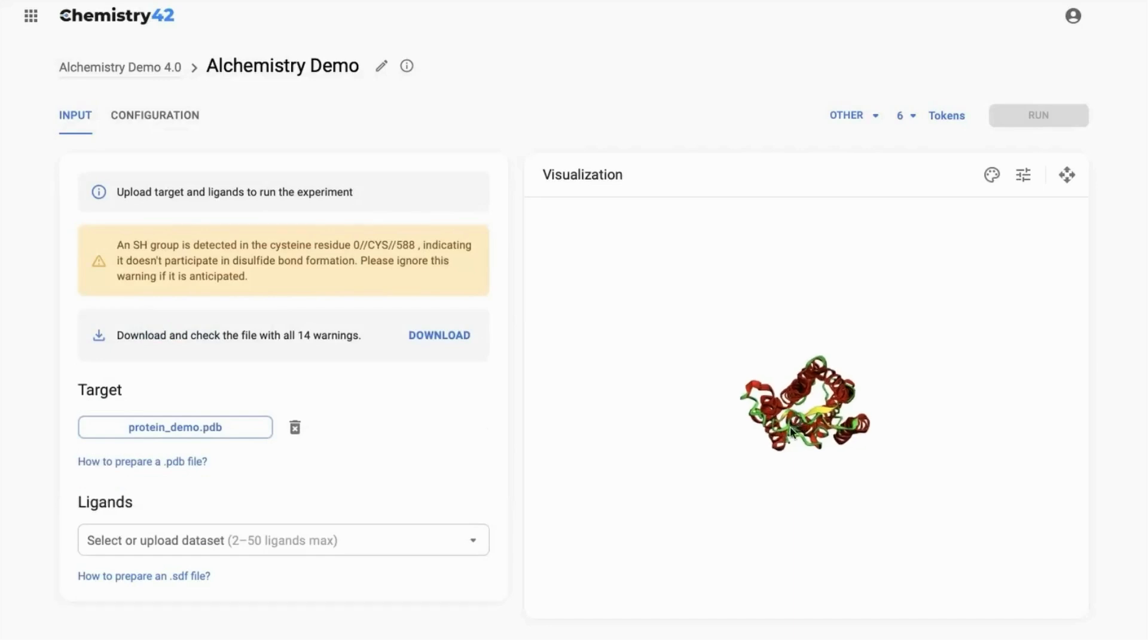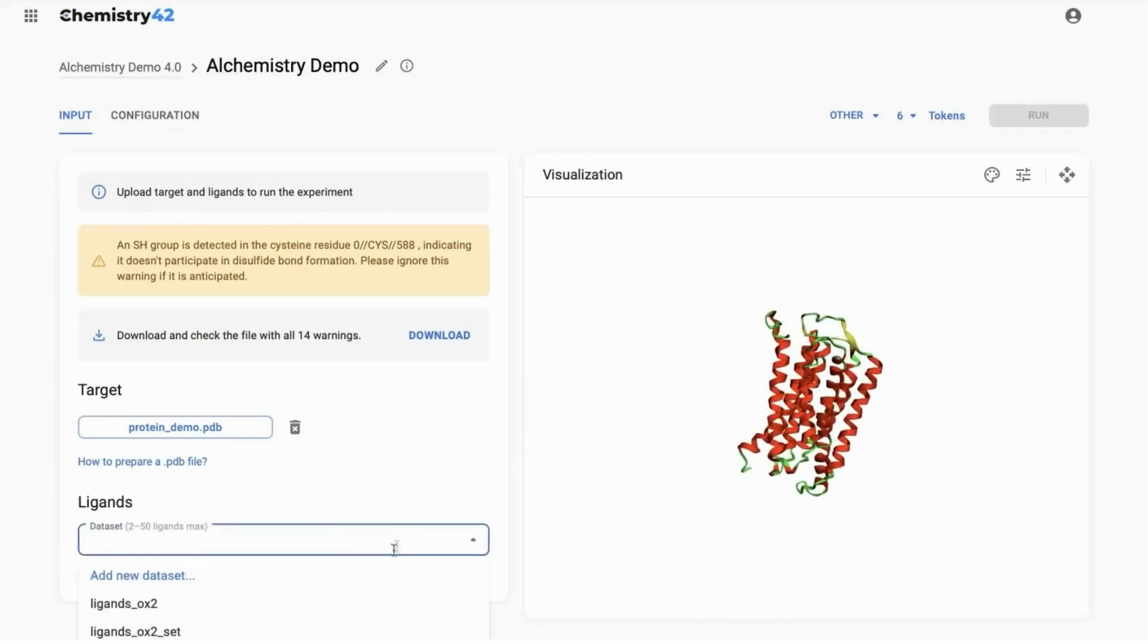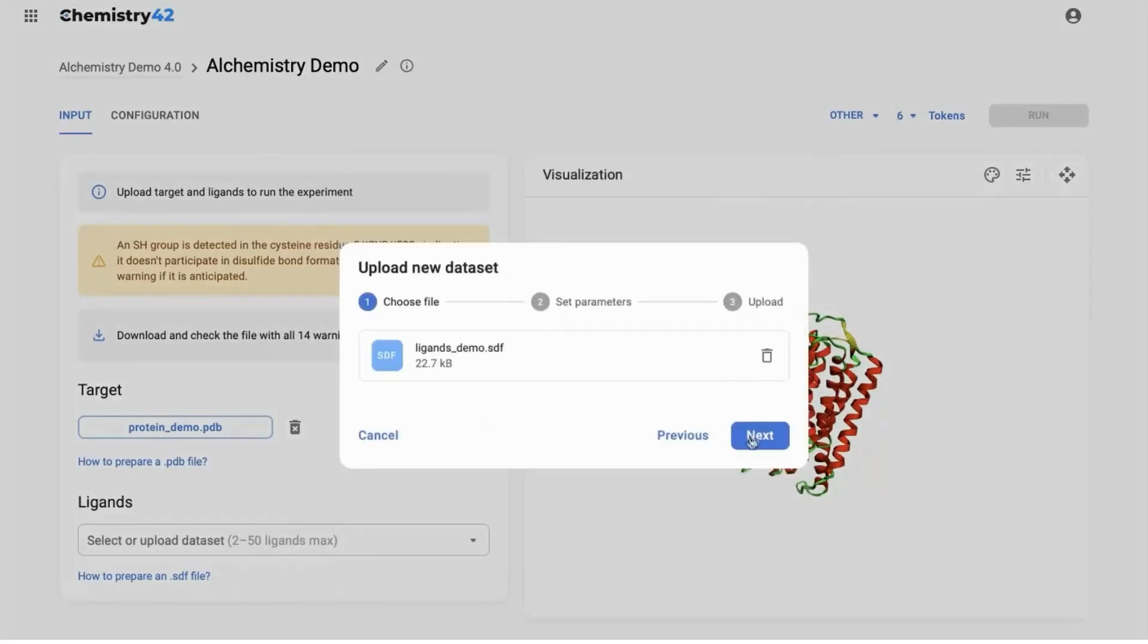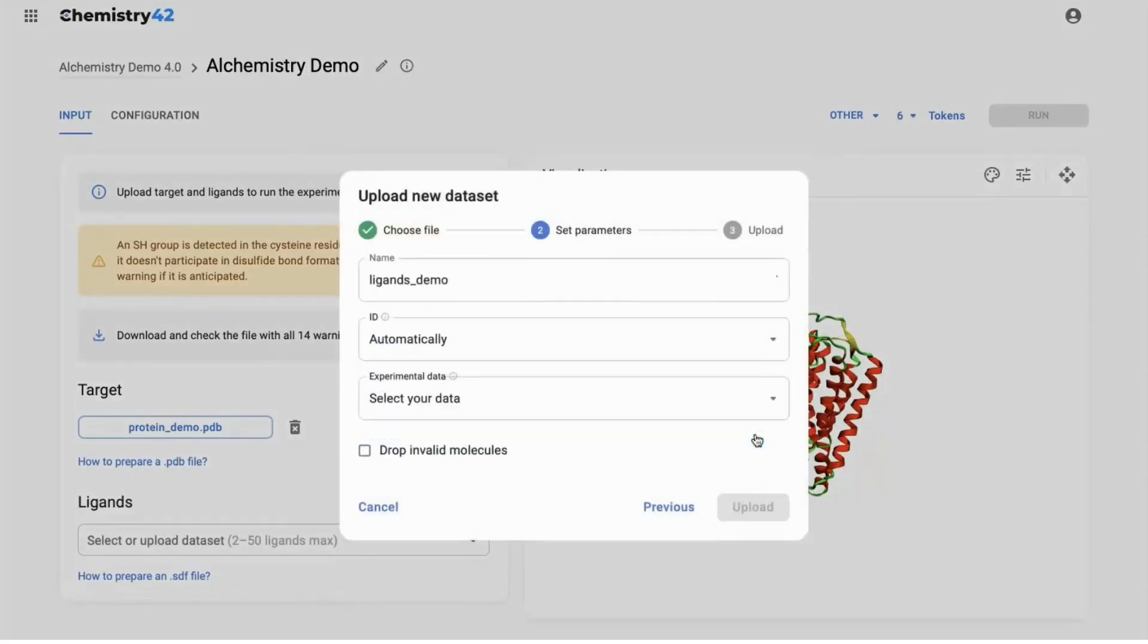For clarity, water and POPC molecules presented in the PDB file are hidden in the visualization window. Now let's move with the ligand file. If you have a separate column with ID numbers in the SD file, you can select it or automatically generate unique IDs. The experimental data can be included as well.